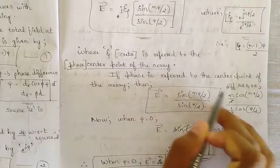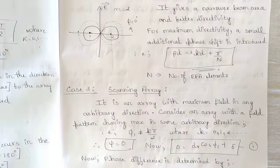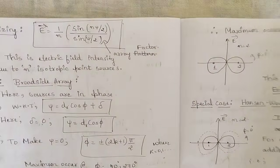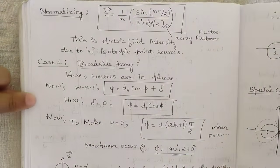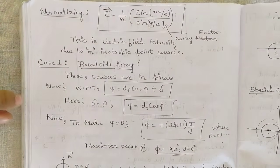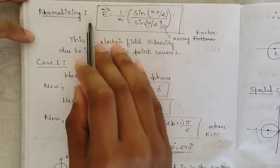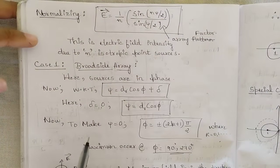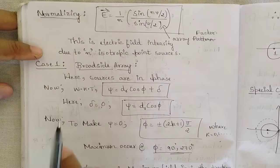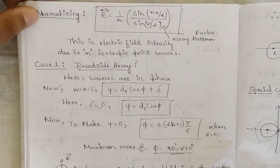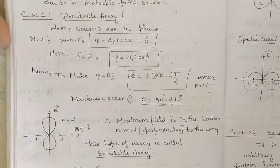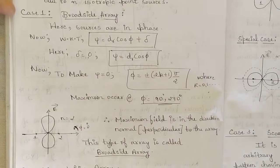Now we should know some special cases — different kinds of linear arrays based on the field patterns generated. There are four kinds of linear arrays we will look at one by one. The first kind is called the broadside array.